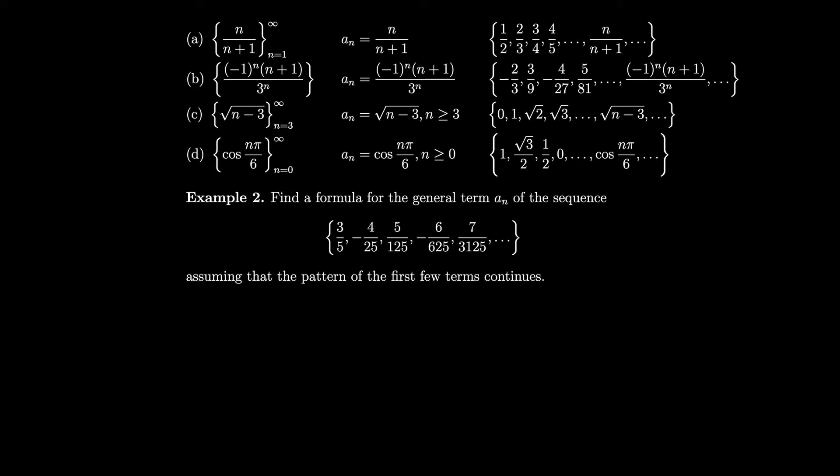In this example we start at n=3. So the first term is the square root of 3−3, which is 0. Notice it doesn't make sense to start the sequence below 3, because then you'd be taking the square root of a negative number.